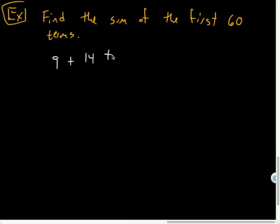So example, find the sum of the first 60 terms. And suppose this is my list. Suppose I've got 9 plus 14 plus 19 plus dot dot dot plus 304. So I'm assuming that this is the 60th term.